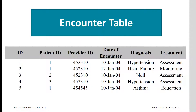The encounter table has patient ID as integer, provider ID as integer, diagnosis as text of size 50, and date of encounter. The table also includes an ID as a primary key, which starts at one and increments by one with each entry. Each encounter has its own ID number, which is different from the patient or provider ID numbers.